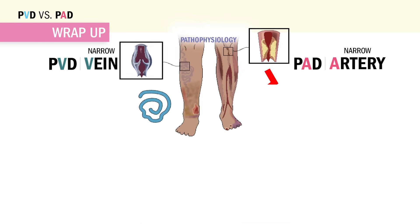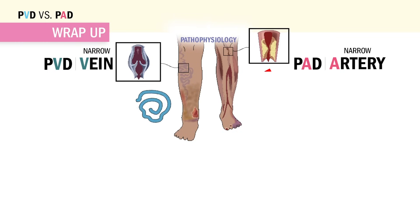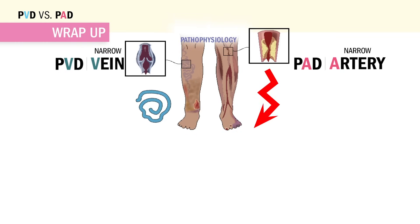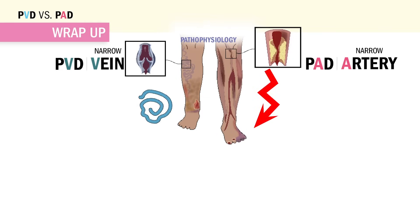The problem here is narrowed vessels. With PVD, we get pools of fluid in the legs where we can't vacuum back to the heart. And in PAD, blood can't be pushed away into the legs.